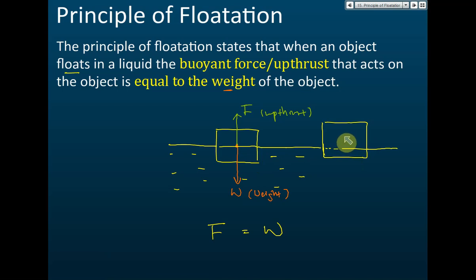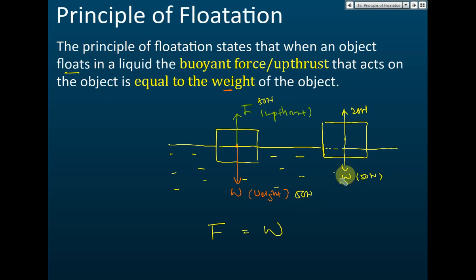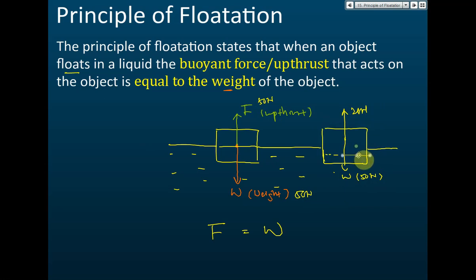If the upthrust is lower than the weight — say the weight is 50 N and the upthrust is only 20 N — the object won't immediately sink but it will move downward a little bit. When it moves down, it displaces more water.